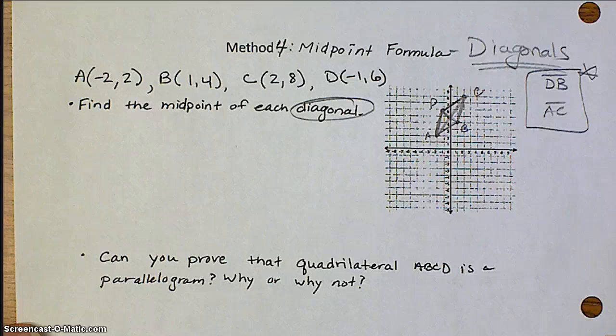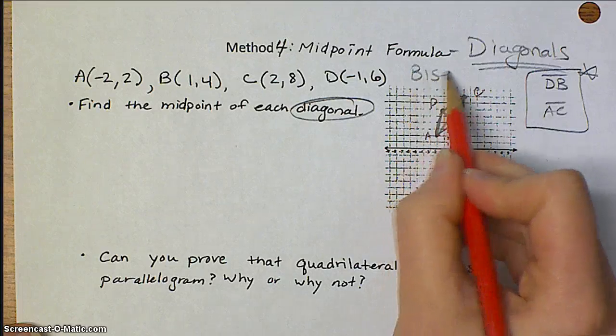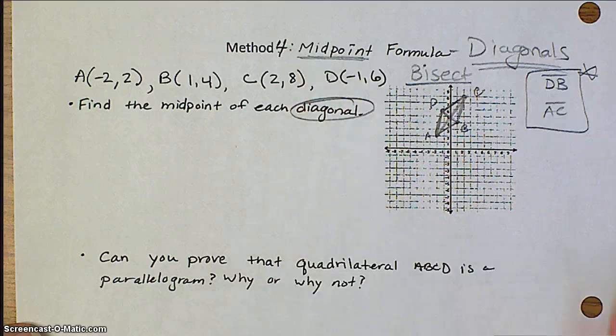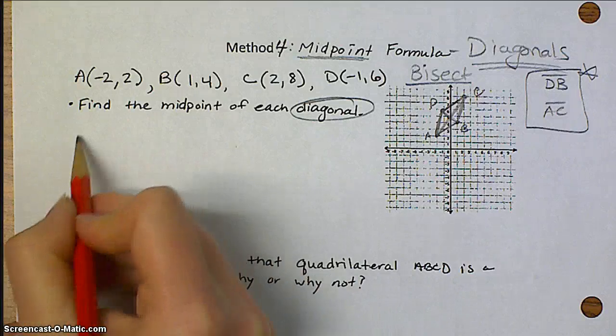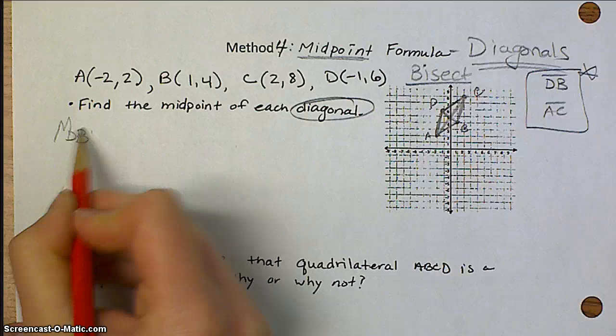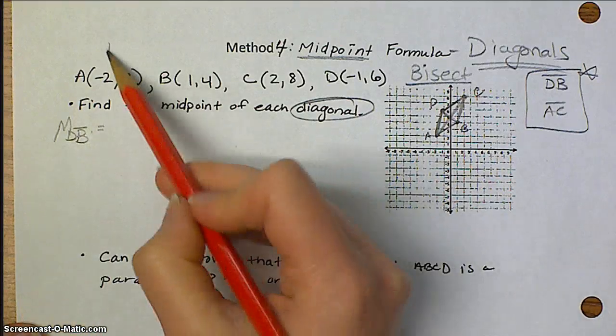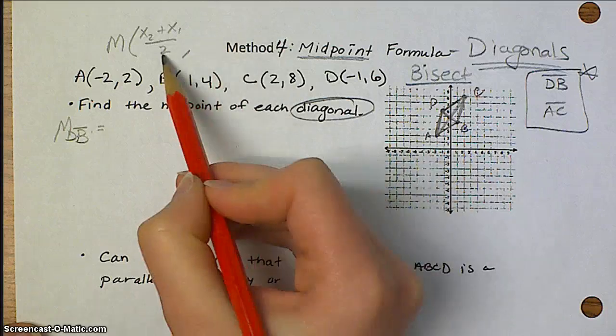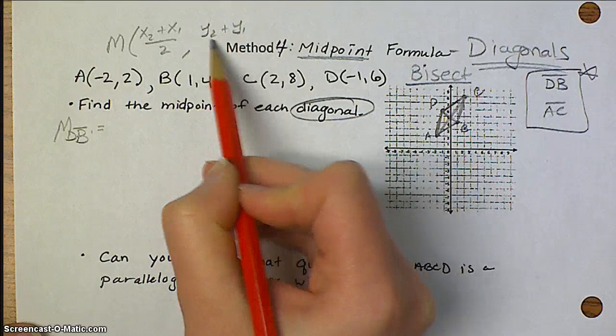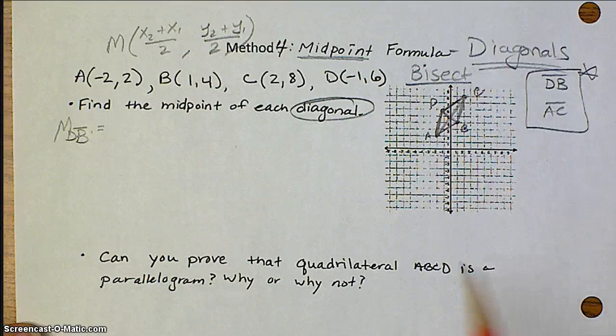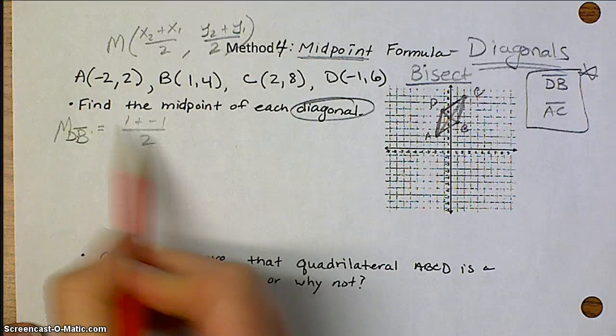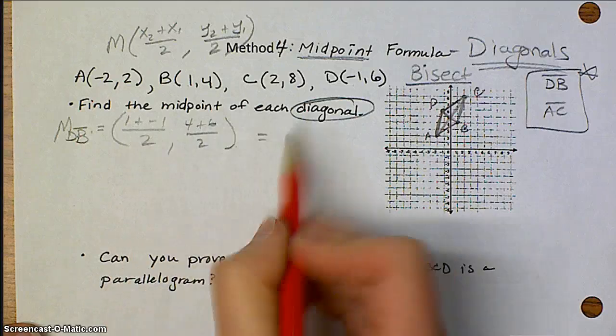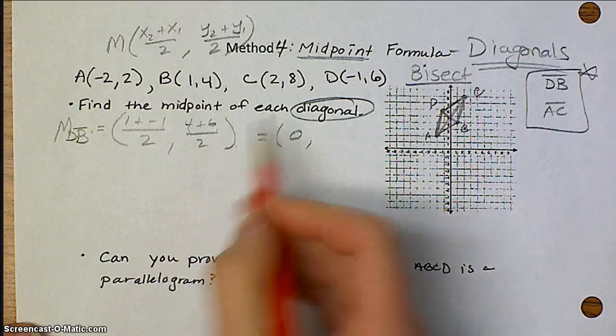So what do we know about diagonals of a parallelogram? They should bisect each other. And to figure out if something's being bisected, we know it's kind of like a midpoint, so we can use the midpoint formula. So we're going to find the midpoint of each diagonal. So midpoint of DB, well, what's our midpoint formula? Add up the x's, cut it in half. That gives you the x-coordinate of your midpoint. Add up the y's, cut it in half. And that gives you the y-coordinate of your midpoint. So for DB, I'm going to add 1 plus negative 1, cut it in half, and 4 plus 6, cut it in half. This right here is going to give me 0. 6 plus 4 is 10. Cut 10 in half, you get 5.